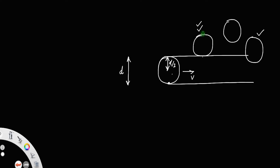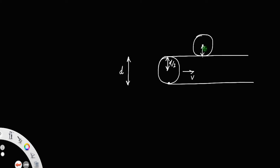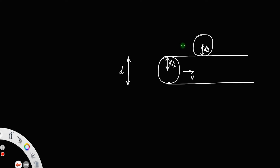So the minimum condition for collision is that a molecule has to just touch the line in order to at least have a collision with this molecule. Since these molecules are similar, the radius is also d by 2, so the distance between the centers of these molecules is d by 2 plus d by 2, which equals d.